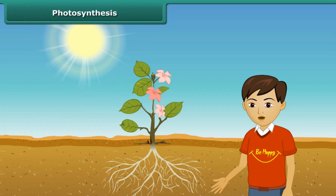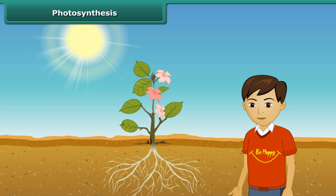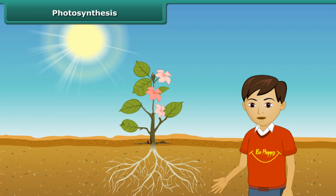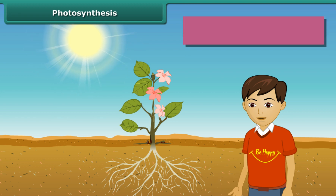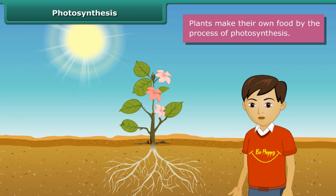Like animals and human beings, plants also require food for their survival. However, unlike animals and human beings, they can make their own food by the process of photosynthesis.